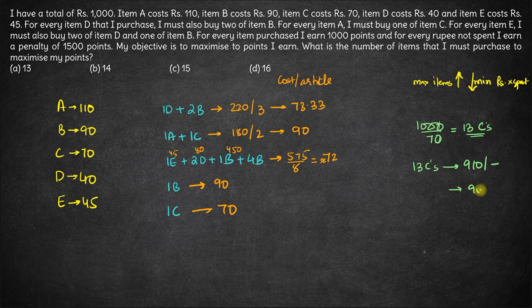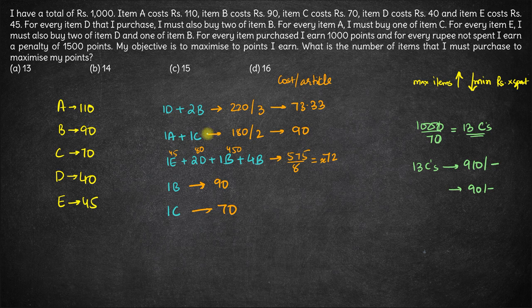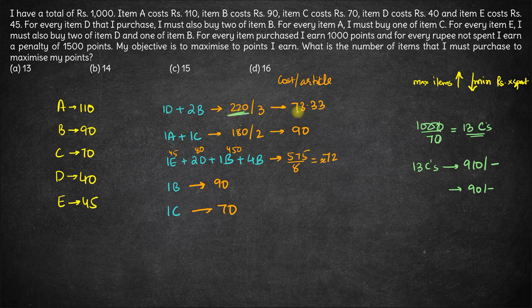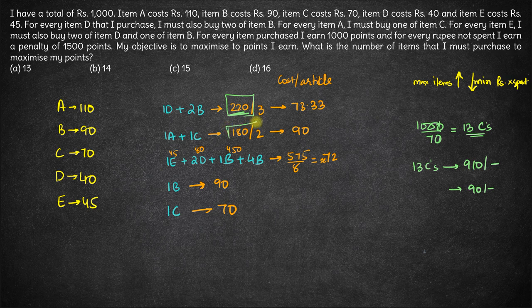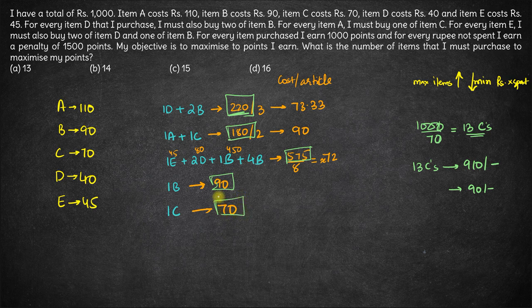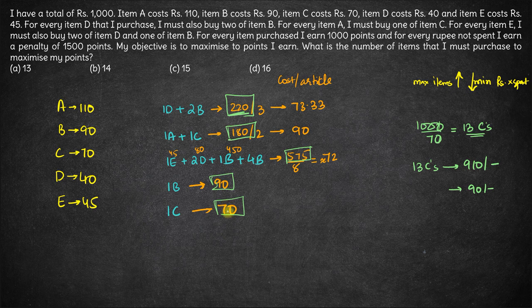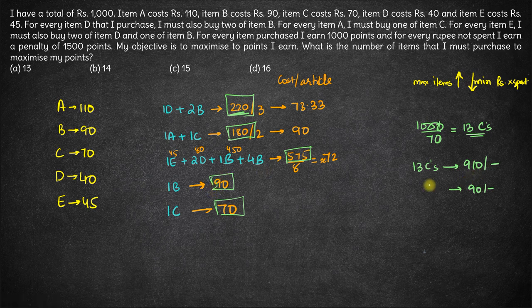So the remaining 90 rupees how can you spend? You cannot buy 1 A and 1 C. Either you'll have to spend 220. Although per article price is this, but if you buy 1 D you'll have to buy 2 B as well. So you'll have to spend 220. You have only 90 rupees left. Here you have to spend 180. Here you have to spend 575. Here you have to spend 90 and 70. So if you have to spend 90 either you can buy B or C. If you buy a C you will still have 20 rupees remaining and that will incur a penalty. So don't do that. Best way is to buy 1 B.